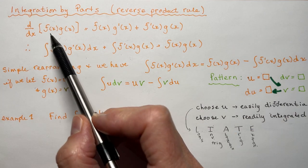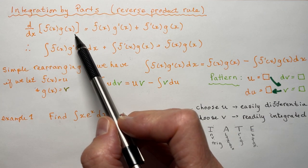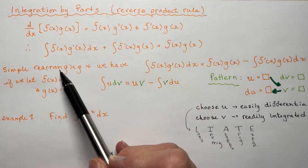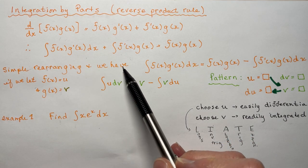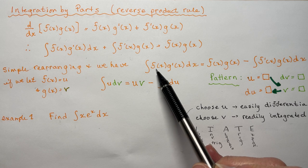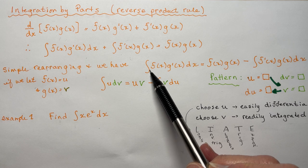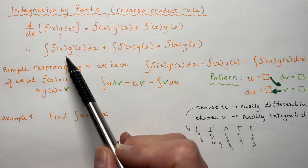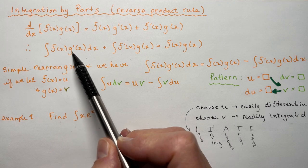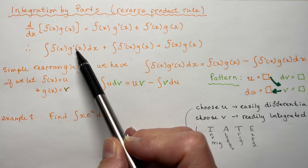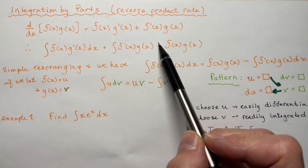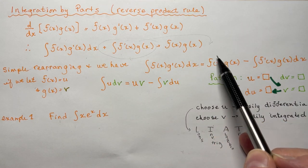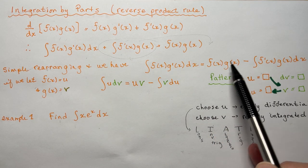That has to be equal to f(x)·g(x). So if we simply rearrange this equation, I would get the integral of f(x)·g'(x)dx — so I'm keeping this one — equal to f(x)·g(x) minus the other integral. So that's all I'm doing here.